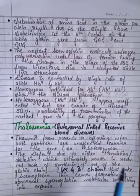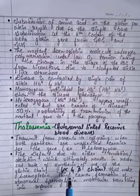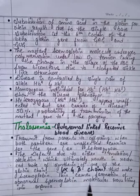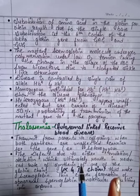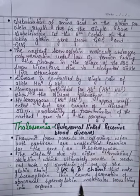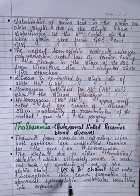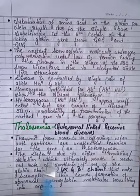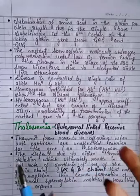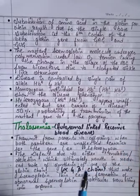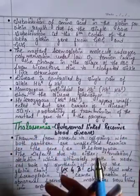The defect is due to either mutation or deletion, which ultimately results in a reduced rate of synthesis of one of the globin chains — specifically the beta-globin chain. This causes the formation of abnormal hemoglobin molecules, leading to anemia.